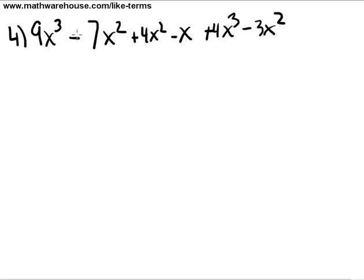9x cubed minus 7x squared plus 4x squared minus x plus 4x cubed minus 3x squared. You know the deal. Our first job is to identify sets of like terms. We've got a 9x cubed and a 4x cubed. These are like terms.